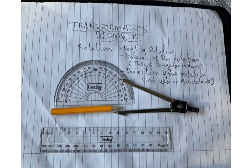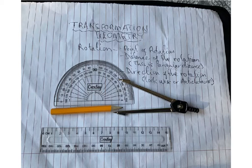Hello. In today's lecture, we'll continue with our transformation topic, but today we'll talk about rotation. A rotation is also a rigid transformation, meaning that the object is exactly the same as the image we get after the transformation. So after any object has been transformed through a rotation, the image we get eventually is exactly the same.